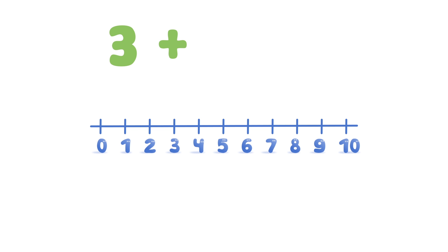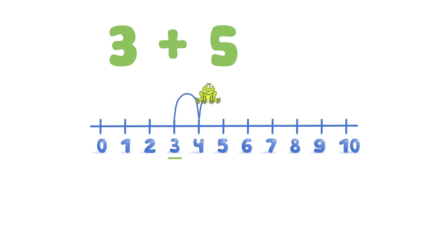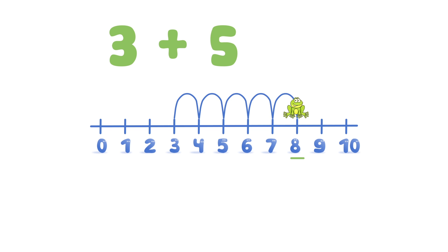Three plus five. The frog starts at three and then moves five places to the right. The frog lands on eight, so three plus five equals eight.